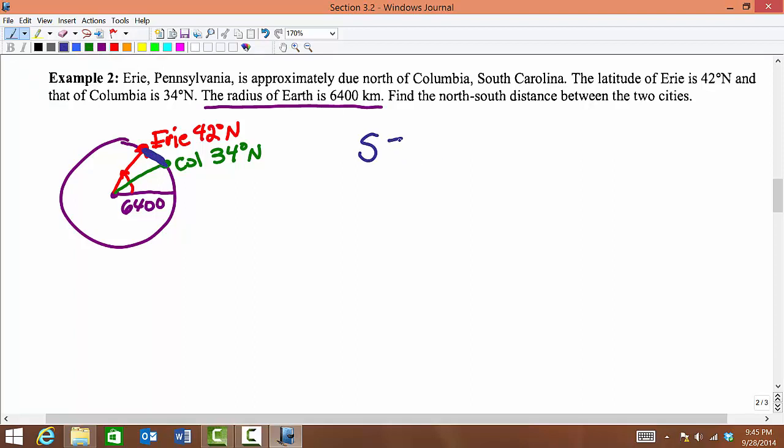We're going to use our formula, S equals r times theta. We must make sure that we have theta in radians. So we're looking for the arc length here. We know the radius is 6,400 kilometers.